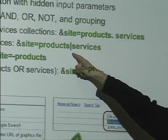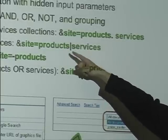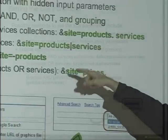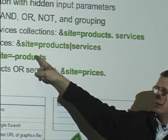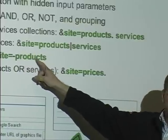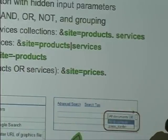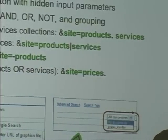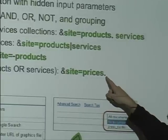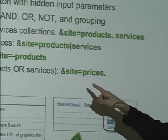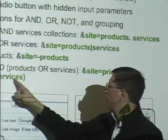The bar operation is for OR — products or services, that's the union; the dot is the intersection. Or you can have a dash, which means all — any content except what does not show up in the products collection will show up in the search results. You can also do multiple logical operations, like 'prices AND products OR services.'